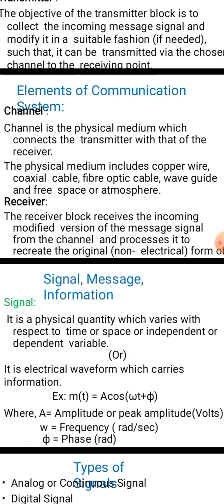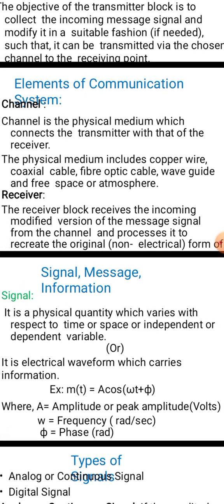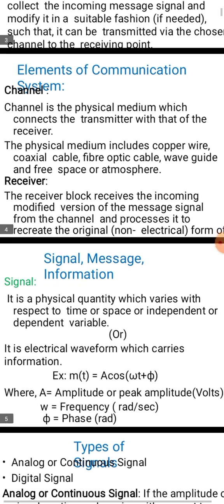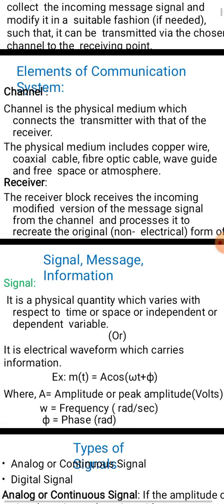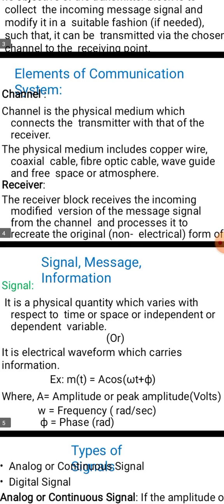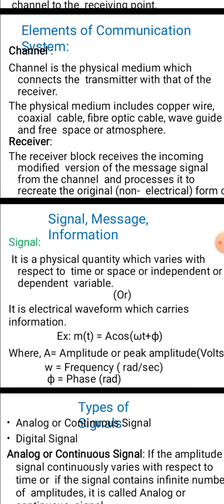Attenuation of the signal through the channel is caused by power loss in wire line channels. For wireless channels, spreading and absorption take place in free space or the atmosphere. Attenuation increases with the length of the channel.